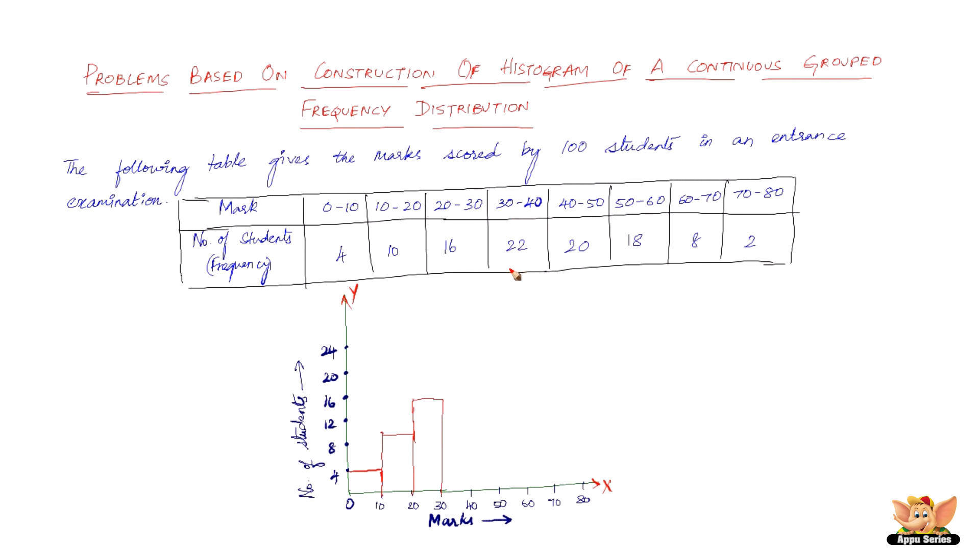And 30 to 40 is about 22. 22 is in between 20 and 24. So here we go. And we've got 40 to 50 at 20. 20 is here. The most important thing to notice here is there is no space between the bars as in the bar graph.